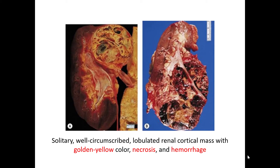The characteristic gross findings include yellow discoloration of the tumor, resulting from lipids that get washed out during tissue processing — the same lipids that give the clear cell appearance microscopically. Surrounding the yellow areas there is cystic change, hemorrhage, and necrosis.